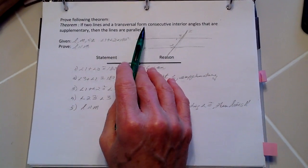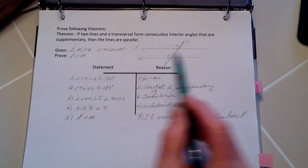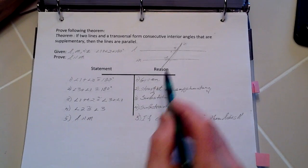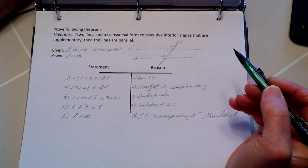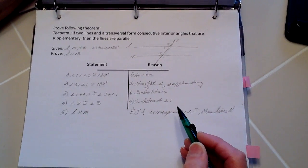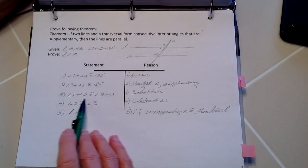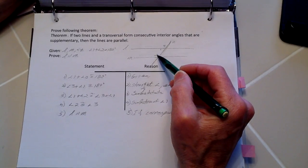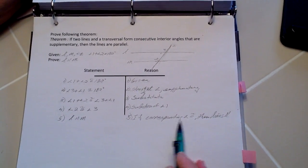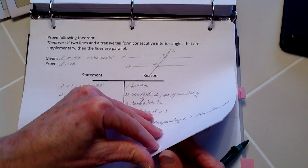Here we have two lines and a transversal forming consecutive interior angles that are supplementary — meaning they equal 180 degrees. We're given that angles one and two equal 180 degrees, and we also know angles three and one equal 180 degrees. By substitution, we can drop out angle one and conclude that angles three and two are congruent. Since those are corresponding angles, the lines are parallel.